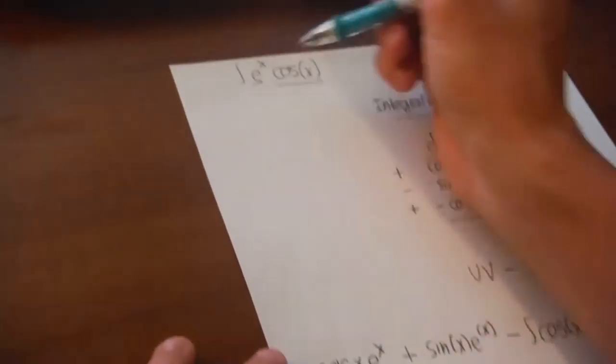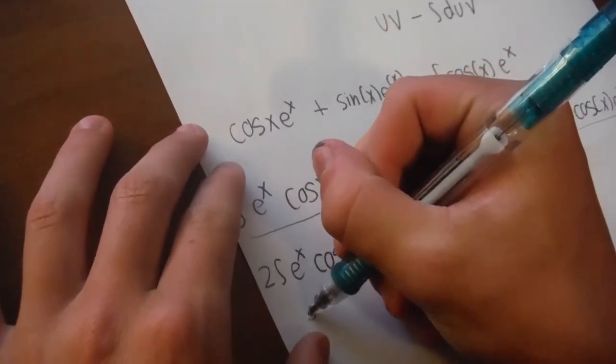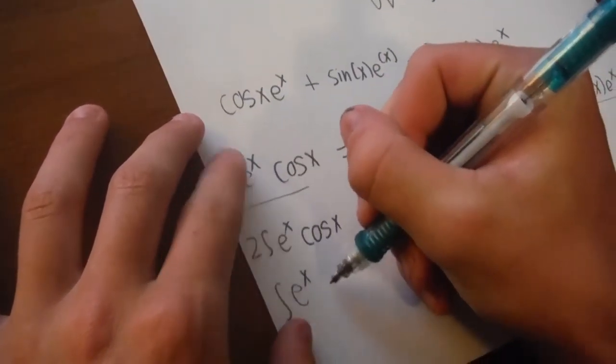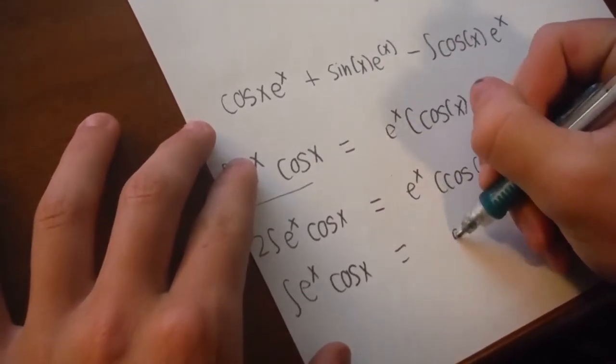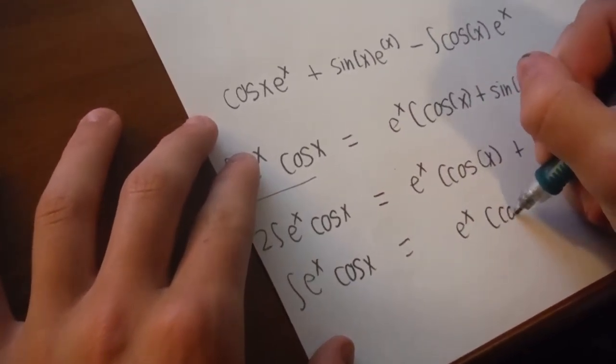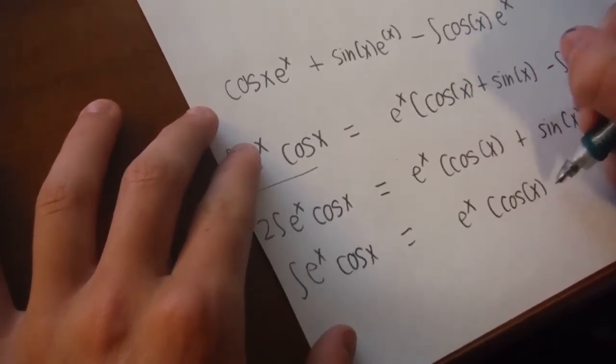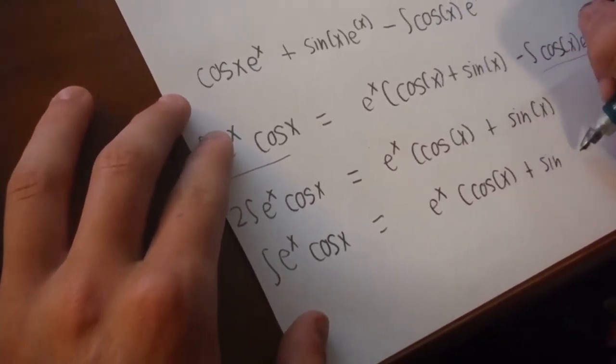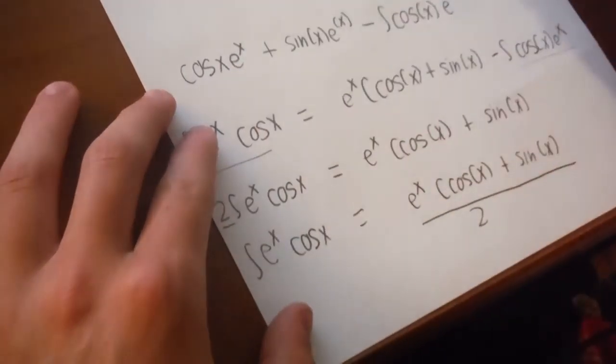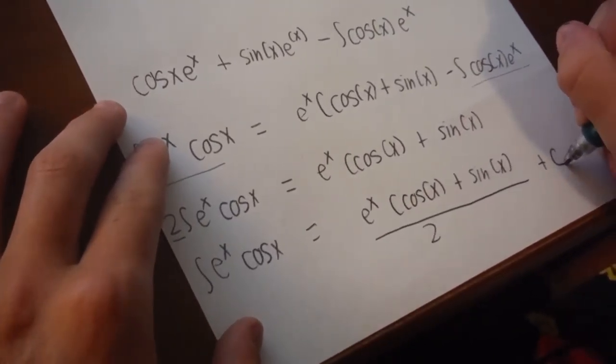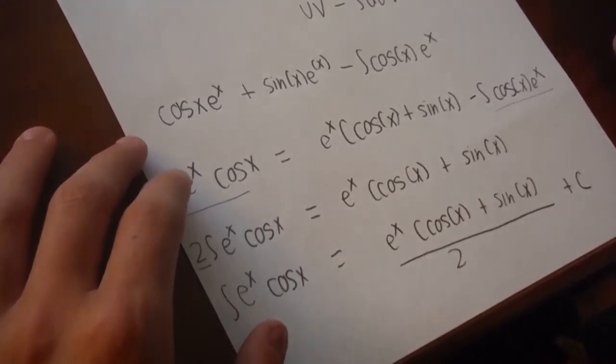So, the integral of e to the x cosine x is equal to e to the x times cosine of x plus sine of x all over two, plus our constant of integration. Alright, that's it.